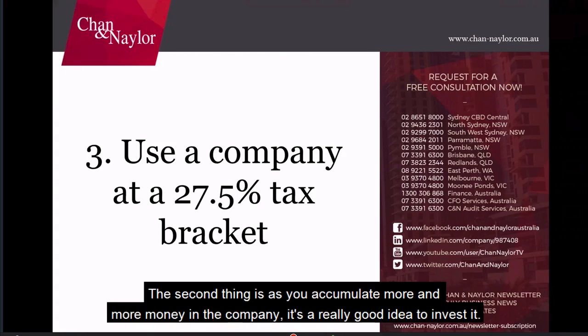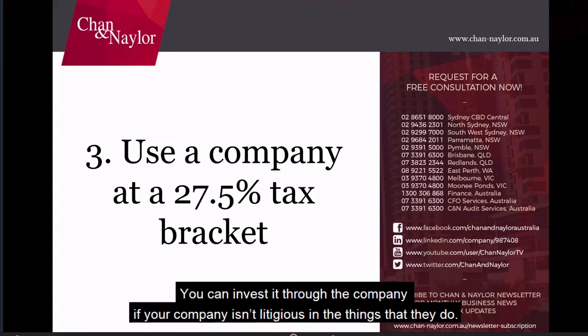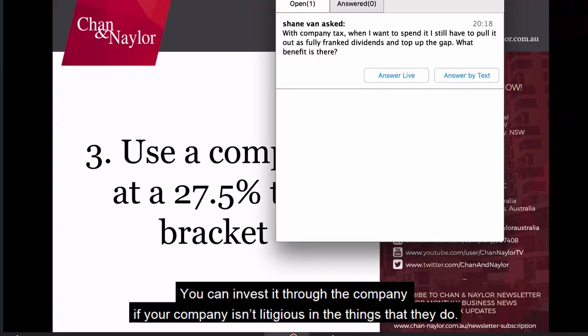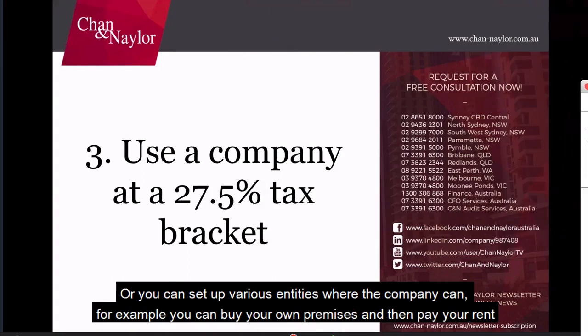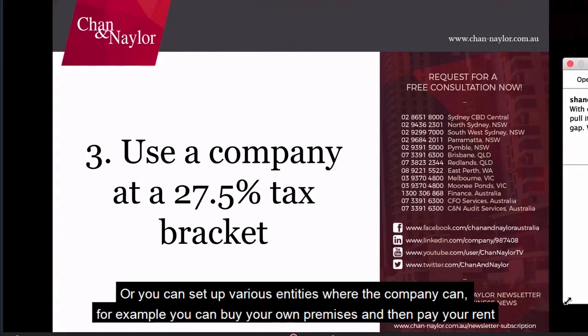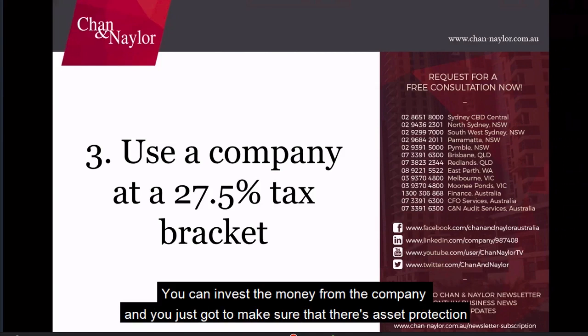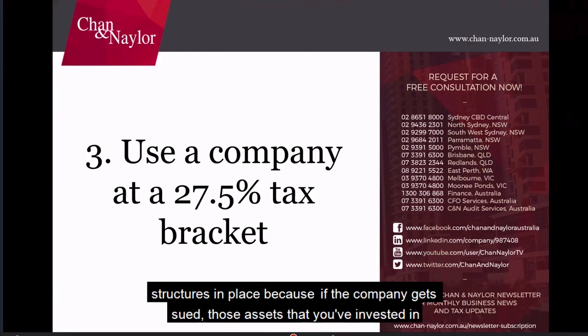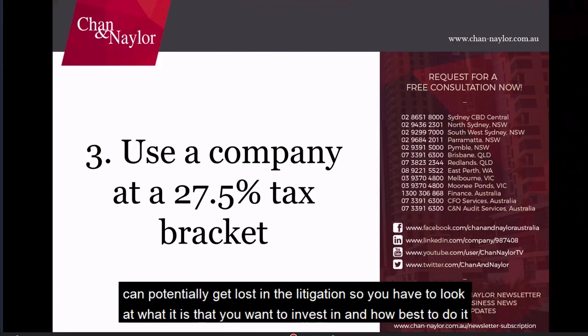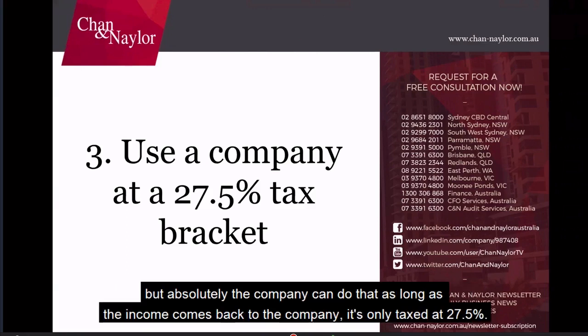As you accumulate more money in the company, it's a really good idea to invest it — you can invest through the company. If your company isn't litigious, you can set up various entities; for example, you can buy your own premises and pay rent from the company to a super fund that owns the premises. You need to make sure asset protection structures are in place, because if the company gets sued, those invested assets could be lost in litigation. As long as the income comes back to the company, it's only taxed at 27.5%.